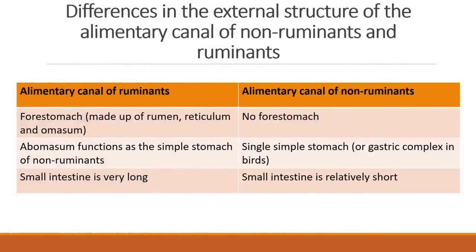To summarize the differences in the external structure of both animals: ruminants have four stomachs — a rumen, reticulum, omasum, and abomasum — while non-ruminants don't have four stomachs; they just have a simple stomach. The last of the four stomachs in ruminants, the abomasum, which is the fourth stomach, functions as a simple stomach similar to that of non-ruminants.